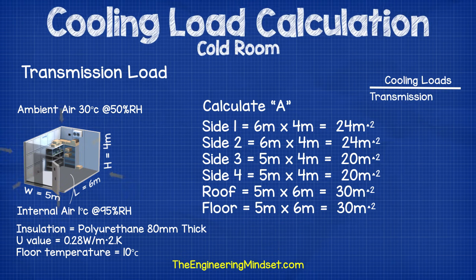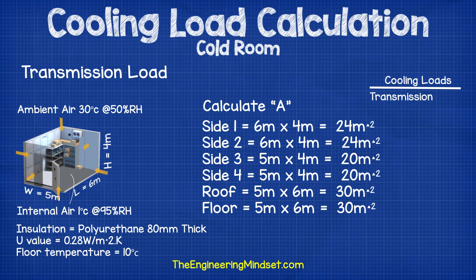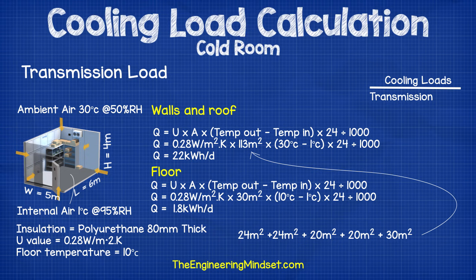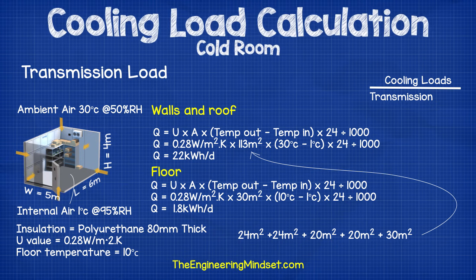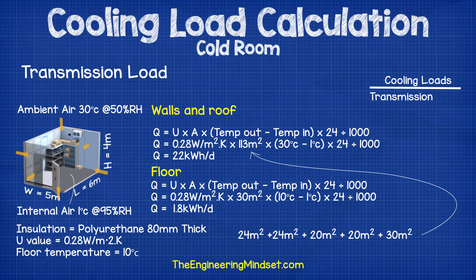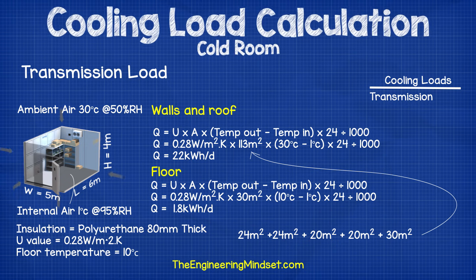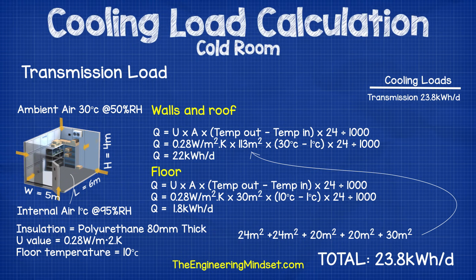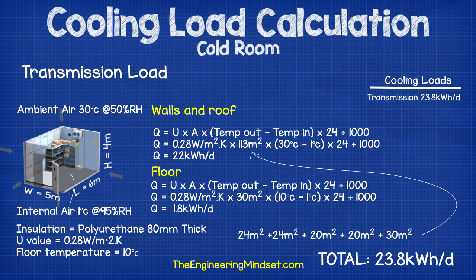To calculate the area A, it's just the size of each of the internal walls, so we drop the numbers in to find the area for each wall, the roof and the floor. You'll need to calculate the floor separately from the walls and the roof as the temperature difference is different under the floor, so the heat transfer will be different. If the floor isn't insulated then you will need to use a different formula based on empirical data. Combining the walls and the roof gives a daily heat gain of 22 kilowatt hours per day, and the floor comes to 1.8 kilowatt hours per day, giving a total transmission cooling load of 23.8 kilowatt hours per day.